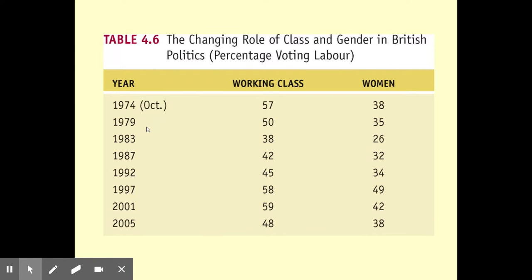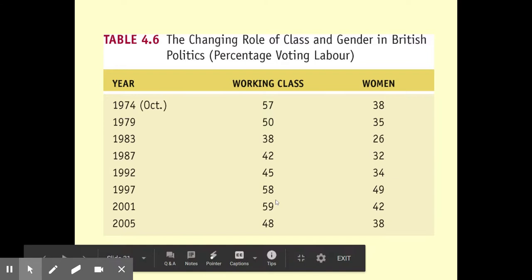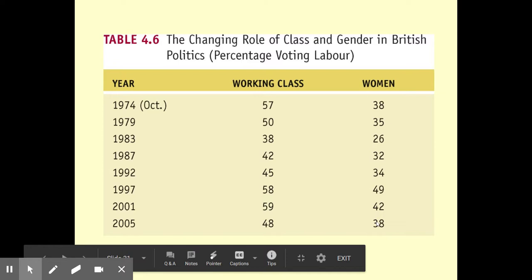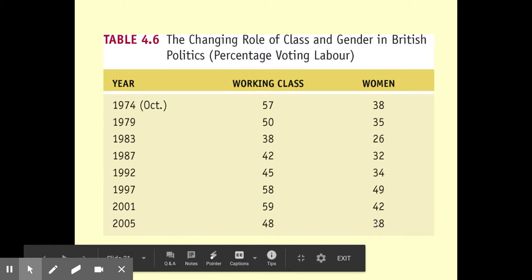When it comes to voting, the changing role of class and gender in British politics — looking at a chart ranging from 1974 to 2005 — the percentage voting Labour has dropped as the number of unions has dropped. There was a big decrease because many union members actually voted Conservative in 1983, for instance. The percentage of women voting for the Labour Party started out at 35%, dropped to 26% once again due to the popularity of Margaret Thatcher, and has been slowly going back up and then coming down a little bit.